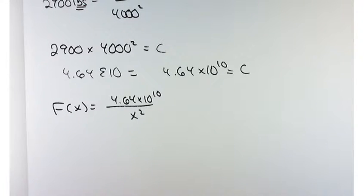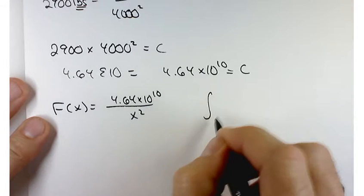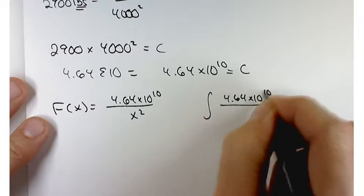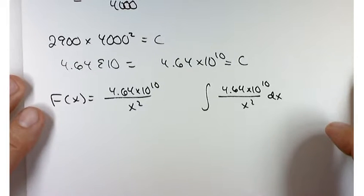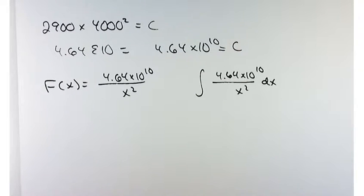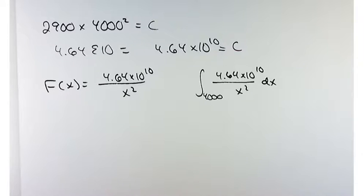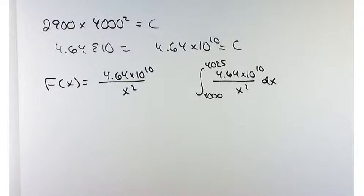Now we've got to figure out how much work is done putting that in a 25-mile-high orbit, so we integrate the force function. The million-dollar question is: what are the limits of integration? You're starting at the surface of the Earth, which is 4,000 miles from the center, and going up 25 miles. So the limits are 4,000 to 4,025 — not 0 to 25.